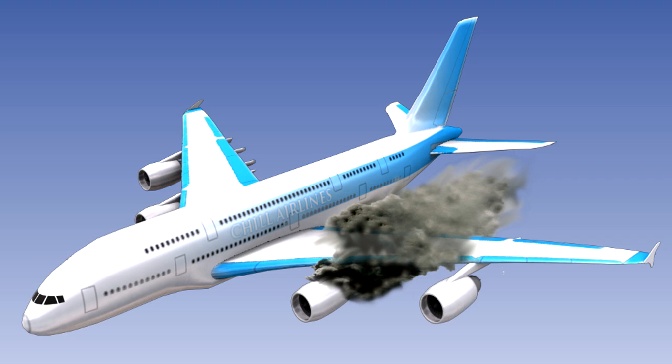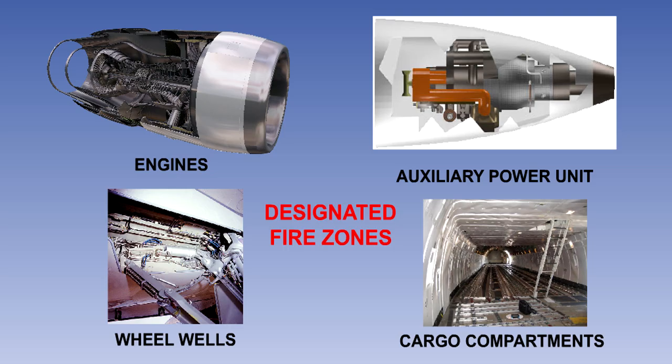That is the end of the lesson. Here is a summary of the main points. The areas of an aircraft fitted with fire protection systems are the engines, the auxiliary power unit, the main wheel bays and the cargo compartments.